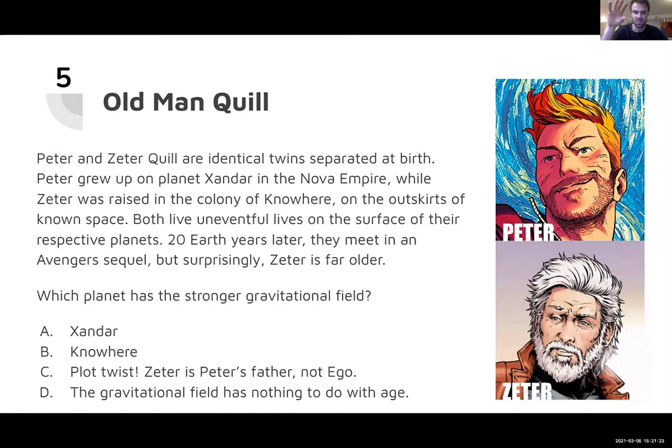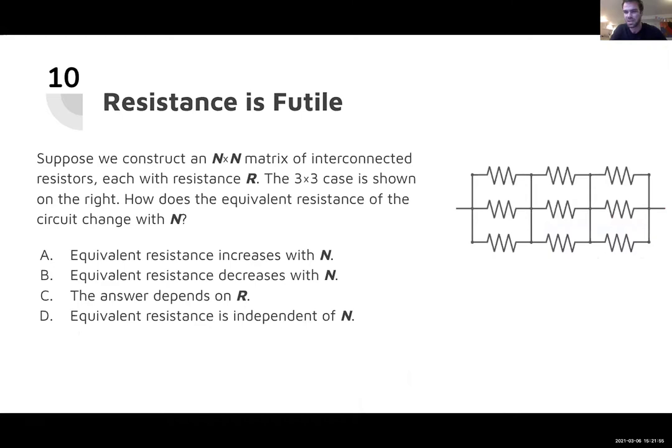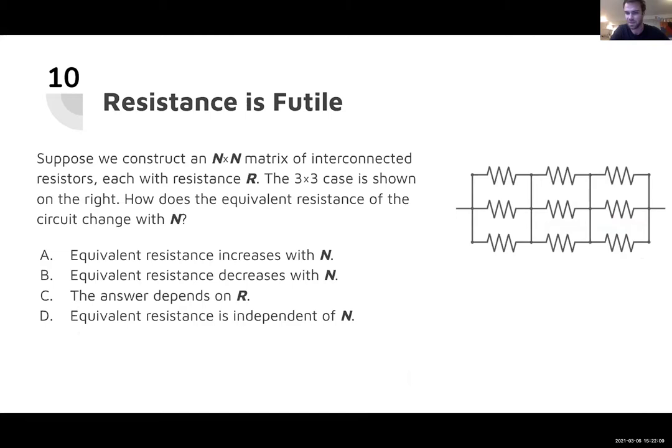Here are two example questions. The first was a Marvel-themed question that required understanding time dilation in general relativity — a subject I certainly didn't see until undergrad and didn't fully understand until grad school. But we had an immediate correct answer: they could explain why Peter was younger than Zeter using the physics of gravitational time dilation.